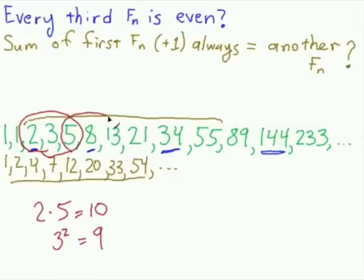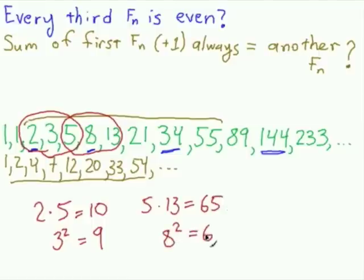Let's try a different pair. Let's try 5, 8, and 13. 5 times 13, well, it's going to be 50 plus 15. That's 65. And then the middle guy is 8. 8 squared is 64. Huh. Again, they're pretty close. Only one-off.